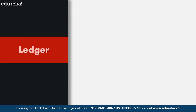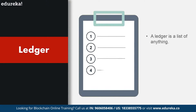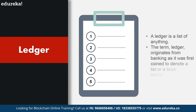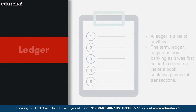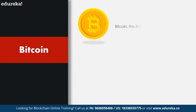Now let's look at the other half of the definition: blockchain is a public ledger system. A ledger is a list of anything. The term ledger originates from banking, where it was first coined to denote a book containing financial transactions. In reference to blockchain technology, a ledger refers to all the transactions that are committed on the network.